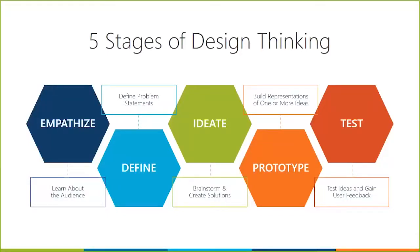Once we've gone out and learned from end users, we move into the define phase, where we define the problem statements. We synthesize everything we learned from the empathy phase and create our problem statement. Once we have our problem statements, then we begin the fun part — ideation, brainstorming, creating solutions, coming up with as many wild and crazy ideas as we can. Then we start to narrow them down and identify areas that we want to build one or more quick representations of, which is called prototyping. Once we have a prototype, we go out and test these ideas and get user feedback.